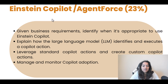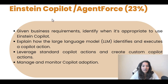The second objective is explaining how the large language model identifies and executes a co-pilot action. We're going to talk about when a particular request comes, how does the bot decide which topic to choose, what action to choose under that topic — so all of that we are going to learn about what are actions.